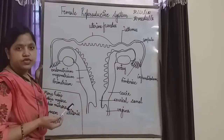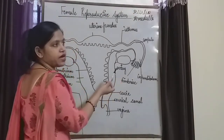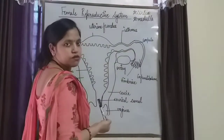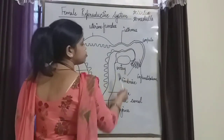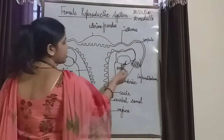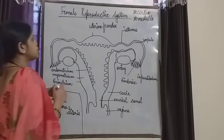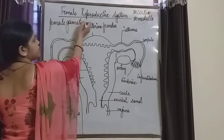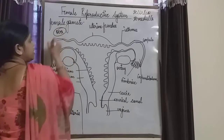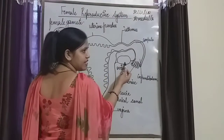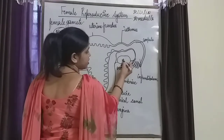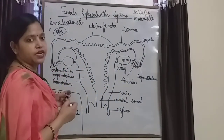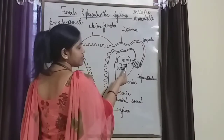The female reproductive system consists of primary organs, and the primary organs or gonads in the human female are known as ovaries. These are 2 to 4 cm in length. These are the basic structures or organs in which female gamete formation takes place. The female gamete is ova, so the formation of ova or eggs takes place inside the ovary. Eggs are the female gamete.